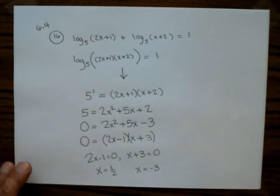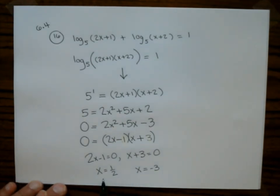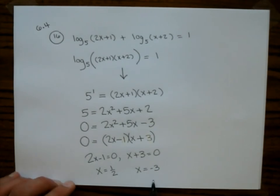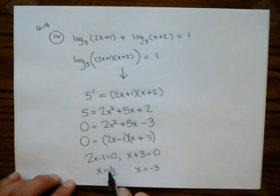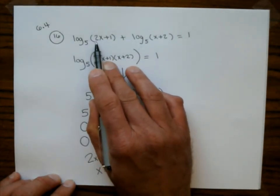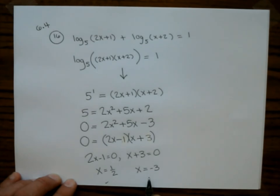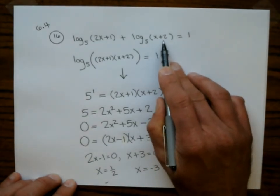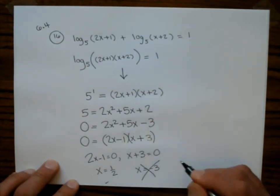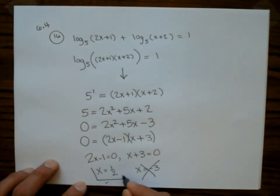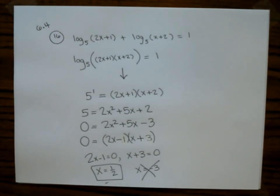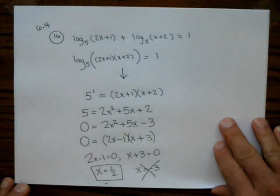With log equations, you must check for extraneous solutions — ones that make the argument negative or zero. For x equals 1/2: the arguments 2(1/2)+1 and 1/2+2 are both positive — good. For x equals negative 3: plugging it in gives a negative argument, which destroys the log. That's an extraneous solution, or what I call a 'terrorist.' The only valid answer is x equals 1/2.